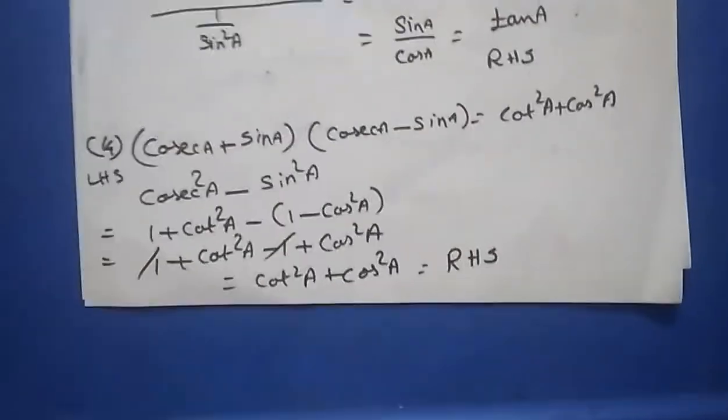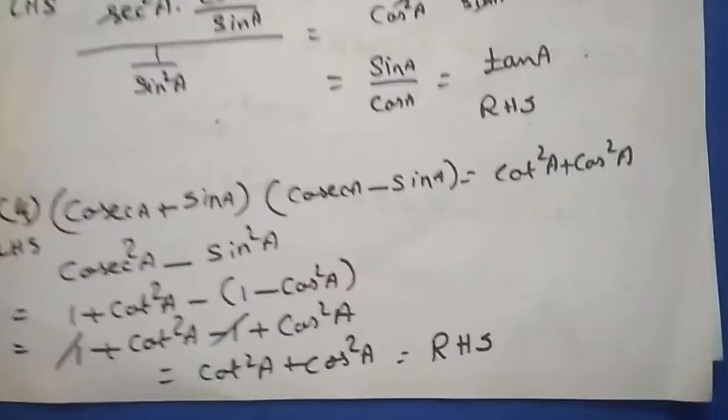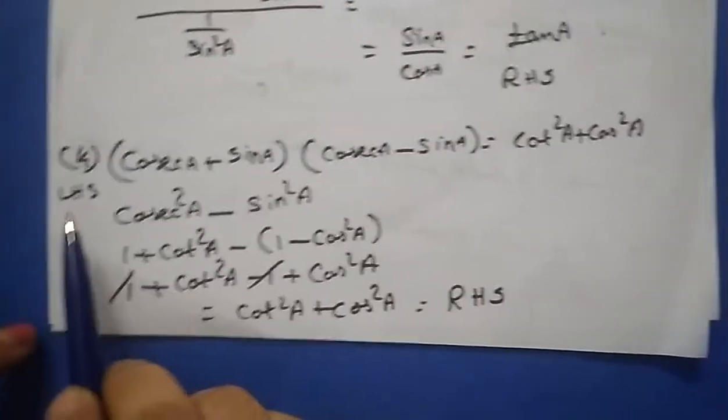Questions 12 and 13 you can solve on your own in a similar way. Question number 14: (cosec a + sin a)(cosec a − sin a) = cot²a + cos²a.